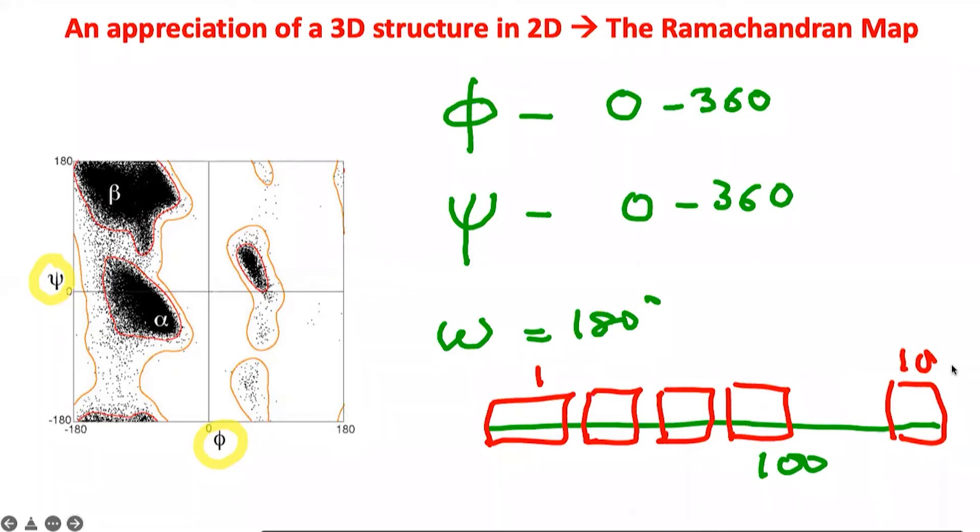This goes from one all the way to 100, and for each peptide unit there is a phi angle—sorry, psi angle—and there is a phi angle. There is a psi angle, there is a phi angle. And if you plot for each unit phi versus psi torsion angle, you get these dots in a two-dimensional representation.